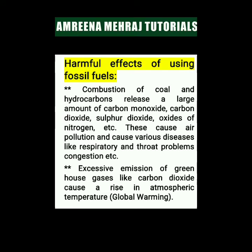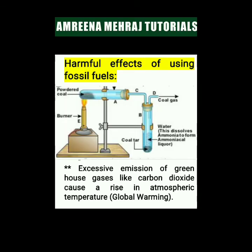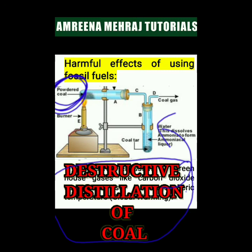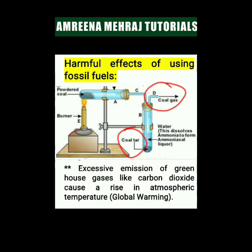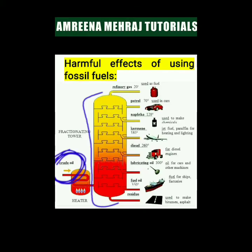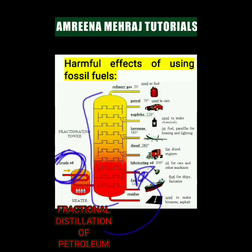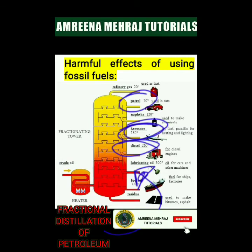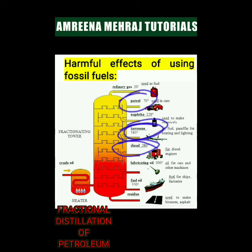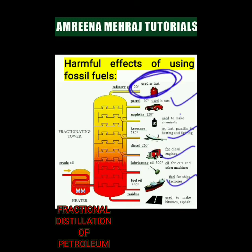Coal and petroleum are natural resources used as fuel in our industries. When we process coal, we get different components like coal tar and coal gas. When we perform fractional distillation of petroleum, we get different fractions such as kerosene, diesel, gasoline, etc. All these substances are then used for different purposes — majorly as fuels in industries, vehicles, and so on.